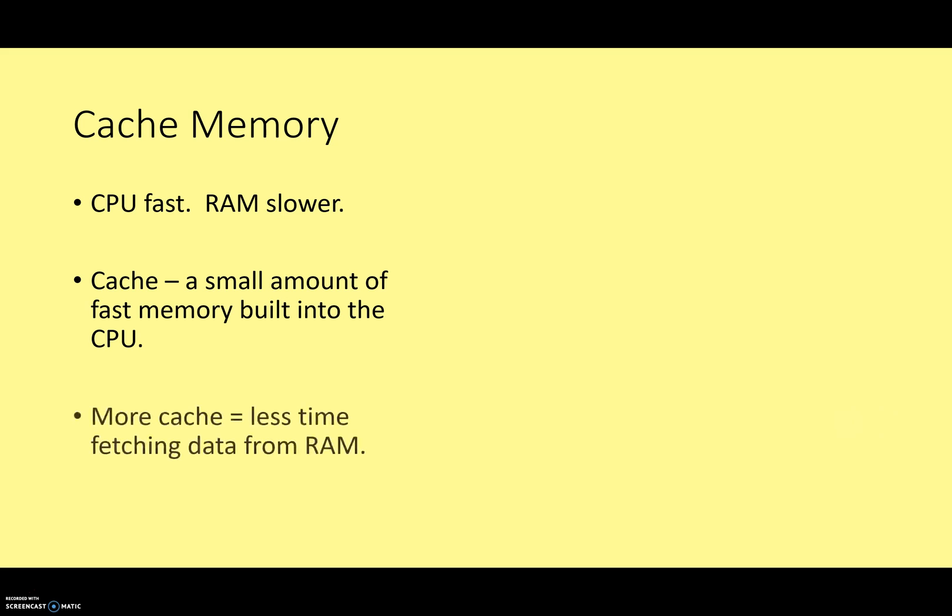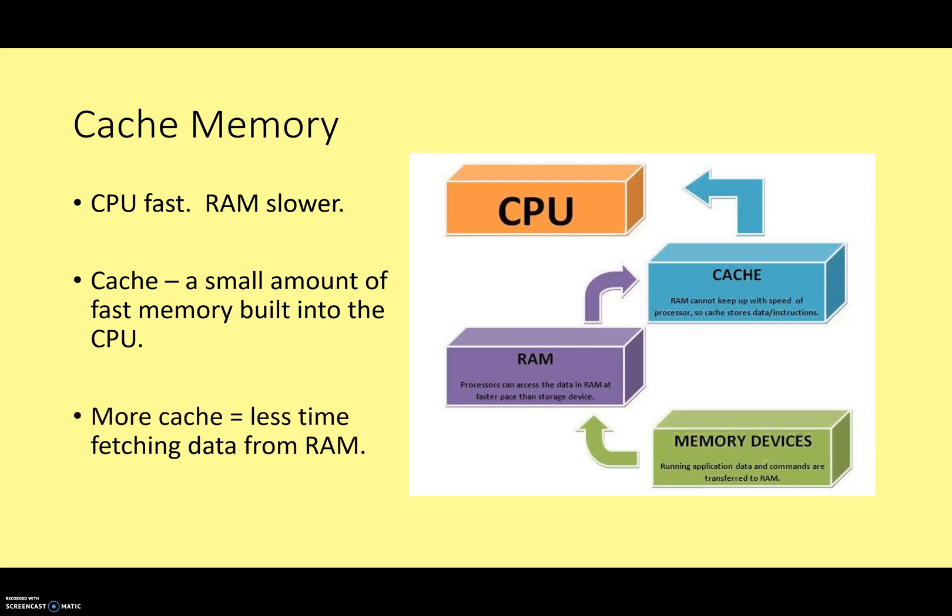Cache memory, our old friend. I'm sure you remember that your CPU is a lot faster than your RAM. To overcome this potential bottleneck, we have a small amount of very fast memory built into the CPU. The larger the cache, the more quickly your CPU can operate, because it doesn't have to worry about getting that data transferred from RAM, which is more slow. It can get it transferred from the cache, which is more fast.